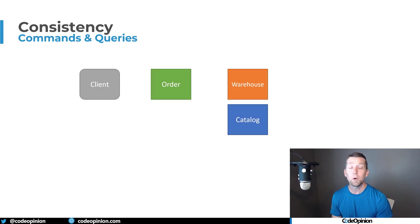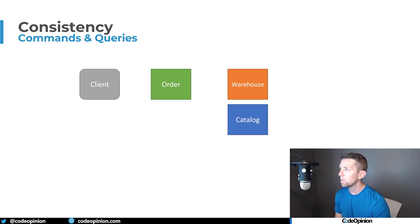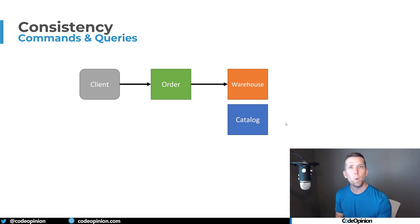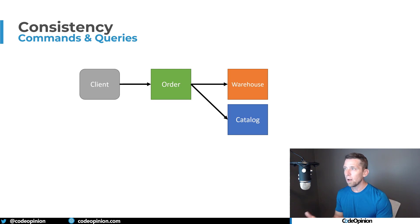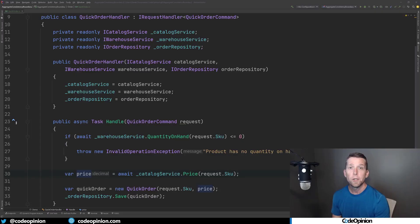If at any point you find this video helpful, please give it a thumbs up and leave a comment. To explain how we're not dealing with consistent data, let's take the example of placing an order. We have our client code calling a command to our order system. What our order needs to do is reach out to the warehouse, make a query to figure out if we have enough quantity on hand for the product. If we don't, we don't want to place the order. If that's successful, we need to reach out to the catalog to get the price to add to our sales order.